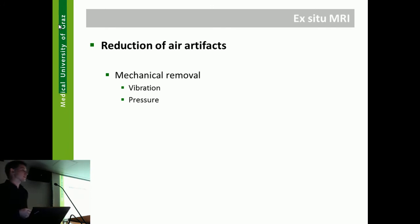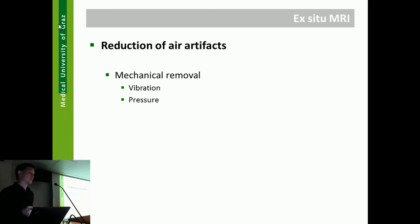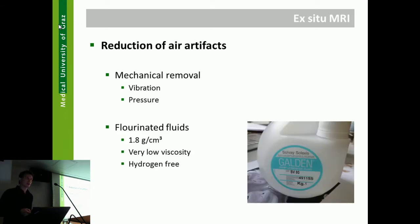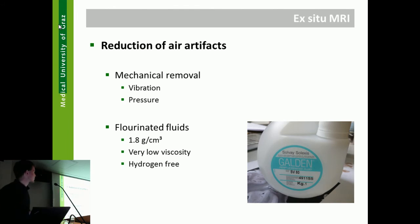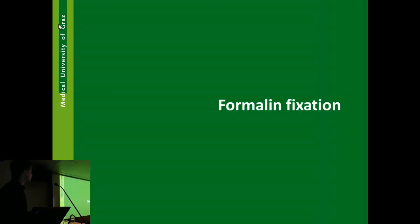Air artifacts can be reduced by vibration and by pressurizing. Traditionally, fluorinated fluids are used — they have high density and low viscosity and are added surrounding the scanned tissue. Formalin fixation is the case for 90% or more of postmortem scans. Tissue obtained from a brain bank or collaborator is formalin-fixed; formaldehyde cross-links proteins and stops autolysis.